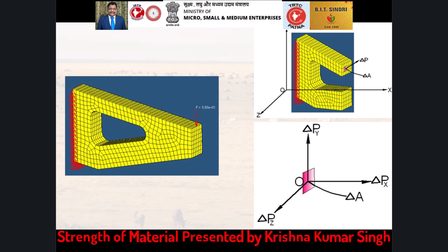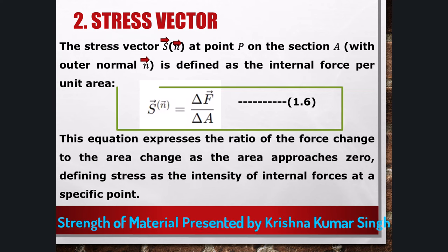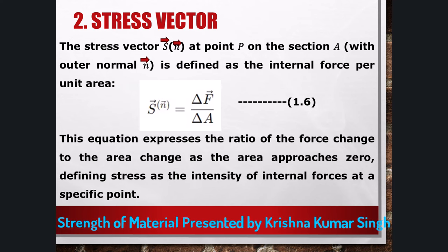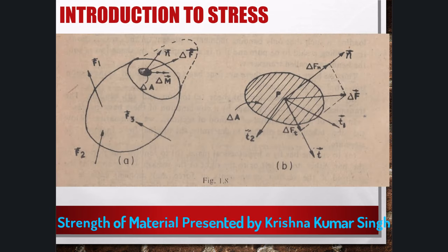The internal forces over the elemental area delta-A may be reduced to a resultant elemental force delta-F and an elemental couple delta-M acting at point P. In general, delta-F and delta-M would be inclined to the normal n to the surface. We now define the stress vector S_n at point P on section A, represented by the outer normal n, as the intensity of internal forces per unit area. The stress vector with respect to the normal vector n is defined as the limit as the area tends to zero of the ratio delta-F over delta-A, which equals dF/dA. See figure 1.8.